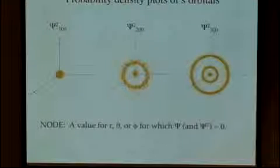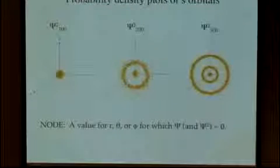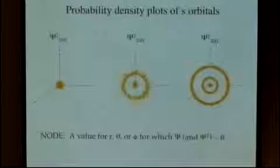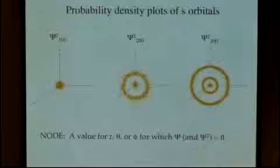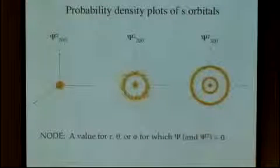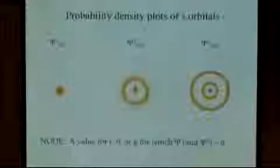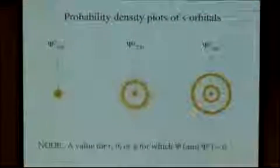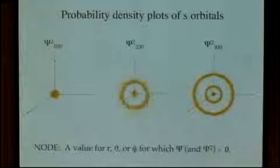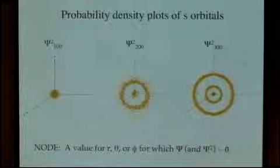A node, more specifically, is any value of either r, the radius, or the two angles for which the wave function — and that also means the wave function squared, or the probability density — is going to be equal to zero.